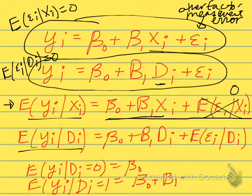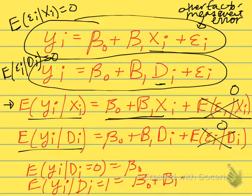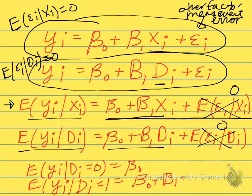For the dummy variable case, we do the same thing. Again, this is equal to 0 by assumption. So our expected value of the outcome is equal to β0 plus β1*di. And now we can ask, well, since di can only take on two values, we can calculate...